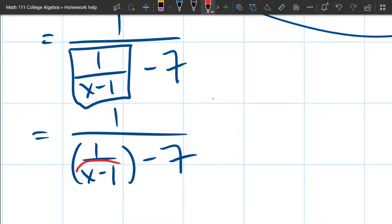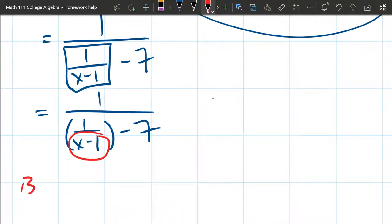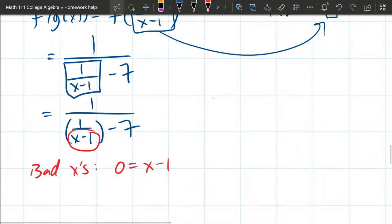The first way that I see is right there. X minus one could be zero. So let's write that down. We're looking for bad x's. So we got zero equals x minus one. All right, that's one possibility. There's another possibility, which is this bigger denominator. That whole thing could be zero.